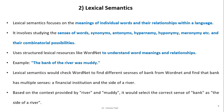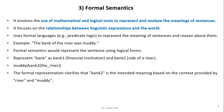For example, using the same sentence 'the bank of the river was muddy,' lexical semantics would check WordNet to find the different senses of 'bank': financial institution and the side of a river. Based on the context provided by words like 'river' and 'muddy,' it would select the correct sense of 'bank' as a river bank.